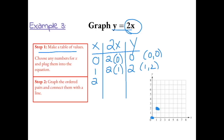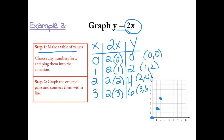Next, plugging in 2: 2 times 2 gives us 4, so our next ordered pair is (2, 4). Lastly, plugging in 3: 2 times 3 gives us an output of 6, so our last ordered pair is (3, 6). The graph creates a straight line, so this is a linear function. Then we can connect the graph of our equation with a line.